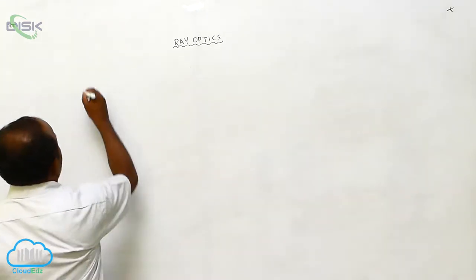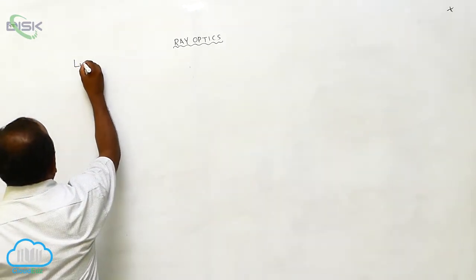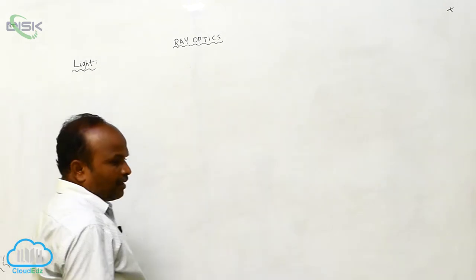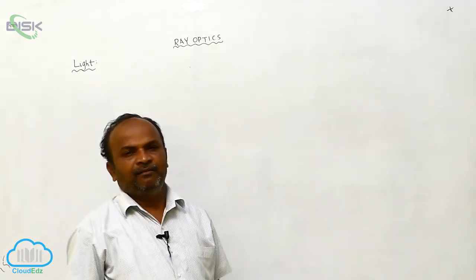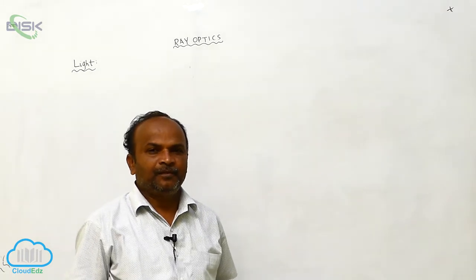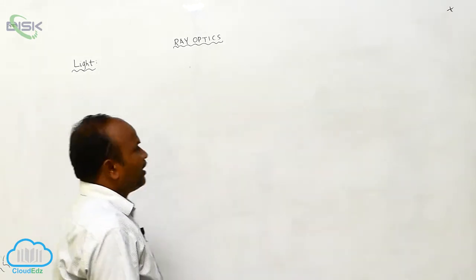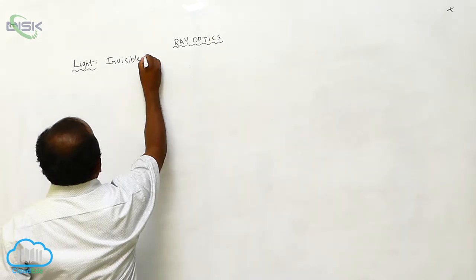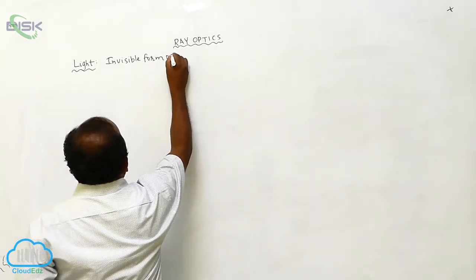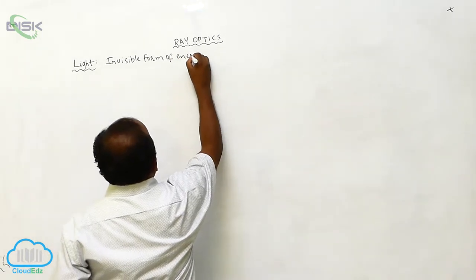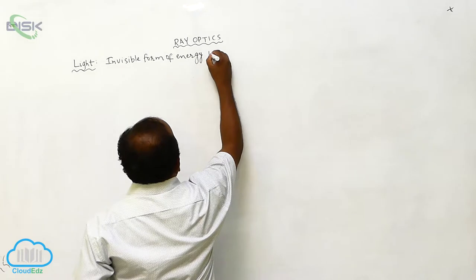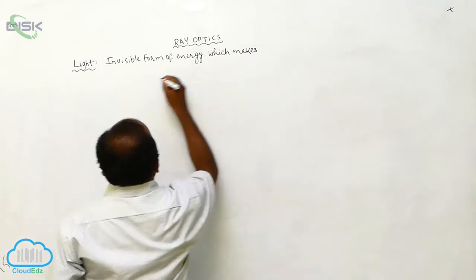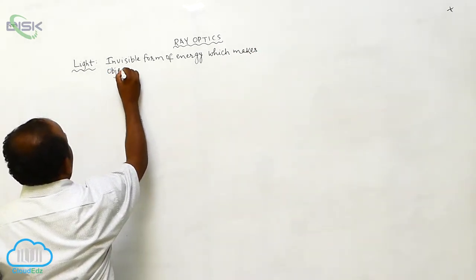First of all, what is the light? The invisible form of energy which makes the object visible is called light.